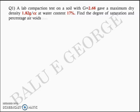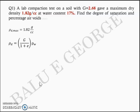Question 1: A lab compaction test on soil with specific gravity 2.68 gave a maximum dry density of 1.82 gram per cc at a water content of 17%. Find the degree of saturation and the percentage air voids. We are given maximum dry density rho_d max = 1.82 g/cc. We know the expression rho_d = G / (1 + e) × rho_w. The void ratio e can be represented as wG/S, where w is water content, G is specific gravity, and S is degree of saturation.